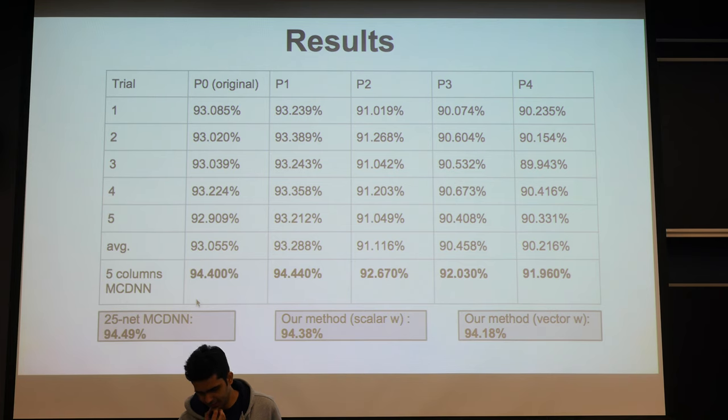And we then went ahead and averaged across all these five MCDNNs to yield a 25-net MCDNN, which gives us a slightly better performance. And this is how it compares to our method, where we use two kinds of weights. One is a scalar weight, other is a vector weight.